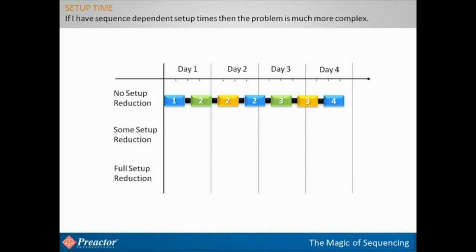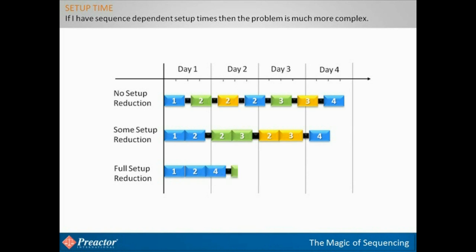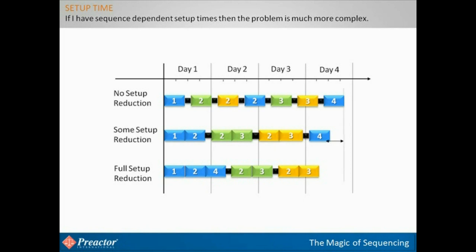This time, we only have a single operation step. The black area between the colored bars is setup time. The number on the bar is the day required for delivery. Depending on how far we look ahead, we can make further improvements, and the total time to complete all the batches is reduced. In effect, we have had a capacity gain.